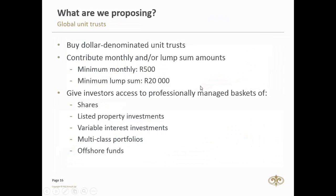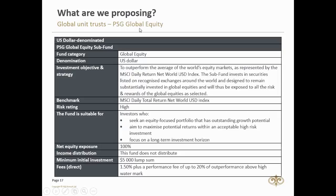Now we're talking about global unit trusts. In this space you're going to buy dollar-denominated unit trusts. On our platform, a minimum investment is 500 Rand or a lump sum of 20,000 Rand. These unit trusts give you exposure to equities, listed property, variable instruments, and multi-class assets. In the PSG space, we've got two funds: PSG Global Equity, which is US dollar-denominated, higher risk, 100% equity exposure, no income distribution, and a minimum of $5,000.